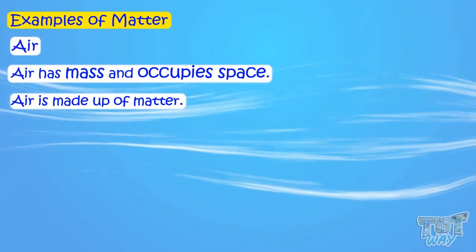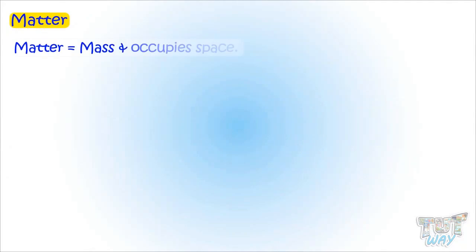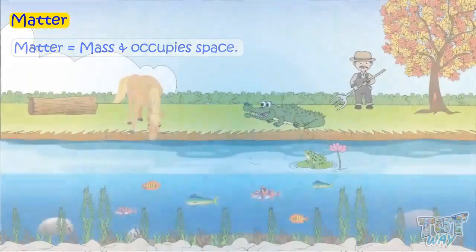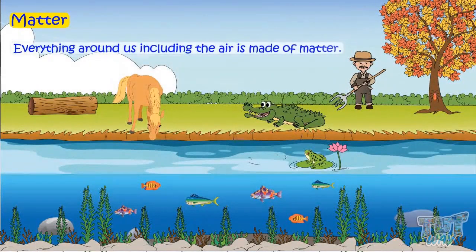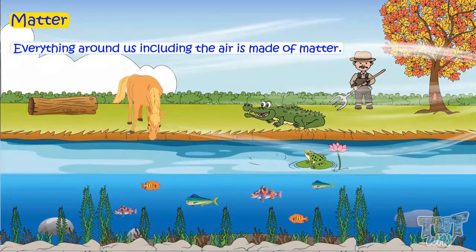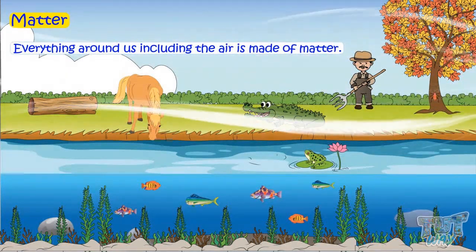So air has mass and occupies space, so we can say air is made up of matter. Now we know matter is anything that has mass and occupies space, and everything around us, including the air, is made of matter.